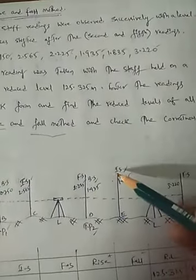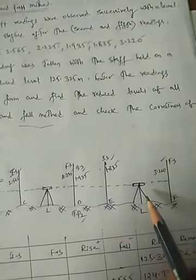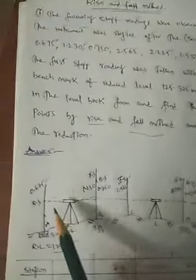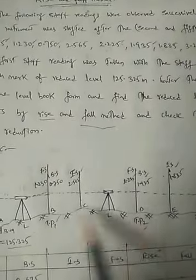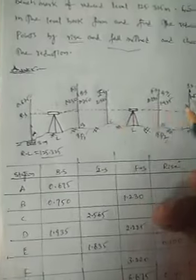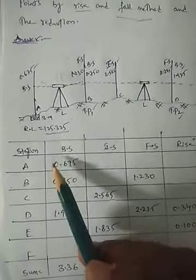So we have one backsight, one intermediate sight, and the last one is foresight. In this way we draw the diagram — one level station, second one, and the third one. Three instruments were fixed on the ground. After drawing the diagram, we label it in our table, and from the diagram we can label it very easily.